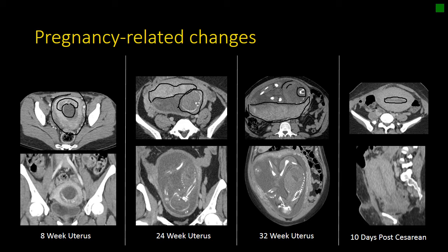Abnormalities would be residual soft tissue or high attenuation within the endometrial canal, or gas that extends into the myometrium. If you do see gas in the endometrium, while that can be normal, it can also be a sign of endometritis, and clinical correlation with infection and vaginal discharge is recommended.